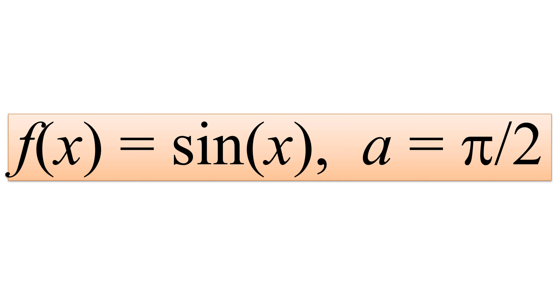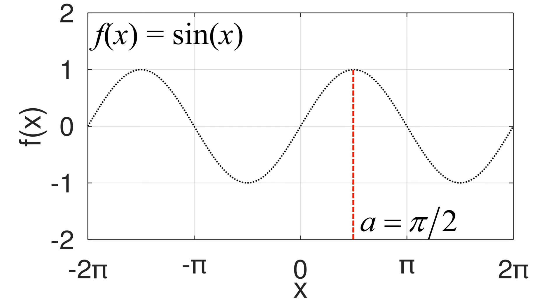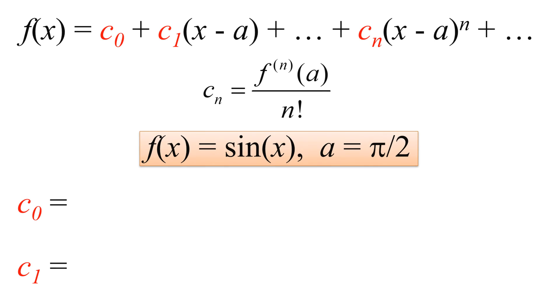What if we have a different A? For example, if we have A equal to pi over 2, we will see how the different A changes the math expression and graph. Let's talk about the math.